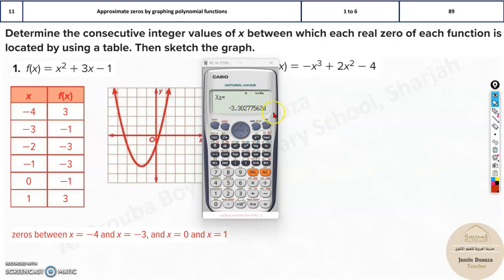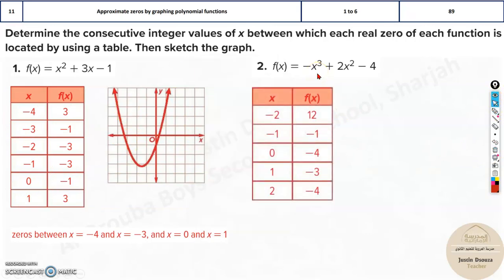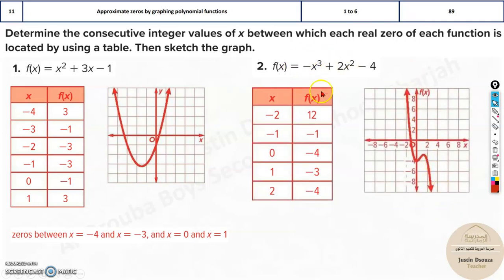But approximation method by the table method, we just get approximate, where is the 0? Wherever the sign changes and the sign is changing at minus 4 and minus 3. You can see the sign of f(x) changes over here at minus 4 and minus 3. So this is your one solution. And it is at 0 and 1. Again, you can see the sign changes over here. That is 0 and 1. That's it. That's how we solve it. So it's very straightforward.